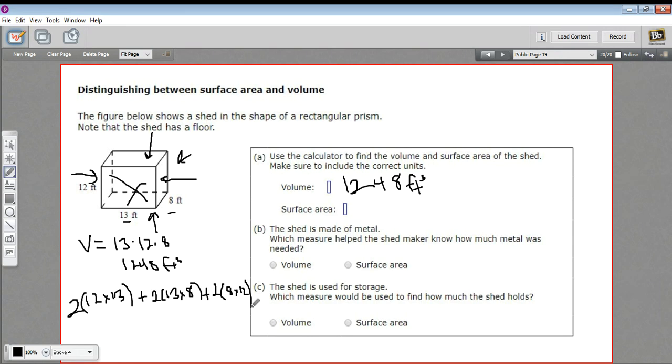Now we need to do a little bit of calculation to figure out all those pieces. So let's start here. 2 times 12 times 13, that's 312. And 2 times 13 times 8 is 208. And 2 times 8 times 12 is 192.